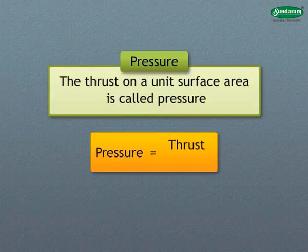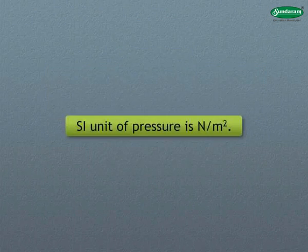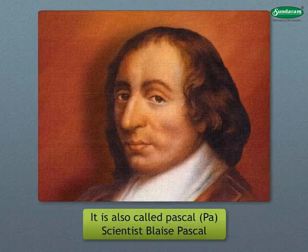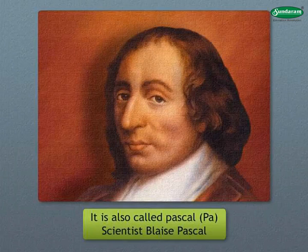The thrust on a unit surface area is called pressure. Pressure is equal to thrust divided by area. The SI unit of pressure is Newton per meter square. It is also called Pascal, or Pa, in honor of the scientist Blaise Pascal.